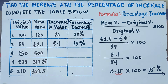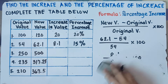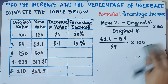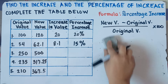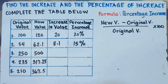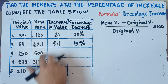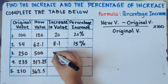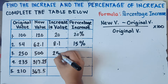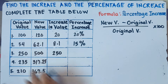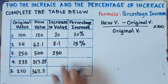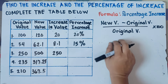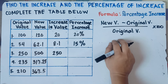Let's have example number three. We have new value 500 and original value 250. Subtracting to get the increase in value: 500 minus 250 gives 250. So the increase in value is 250. Now let's use the formula to get the percentage increase.